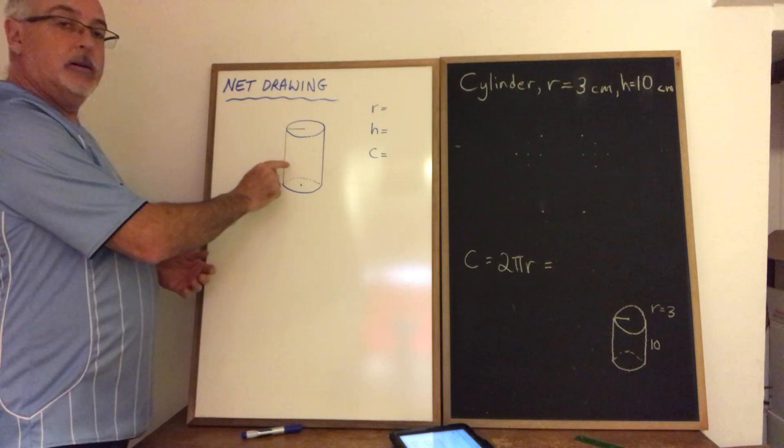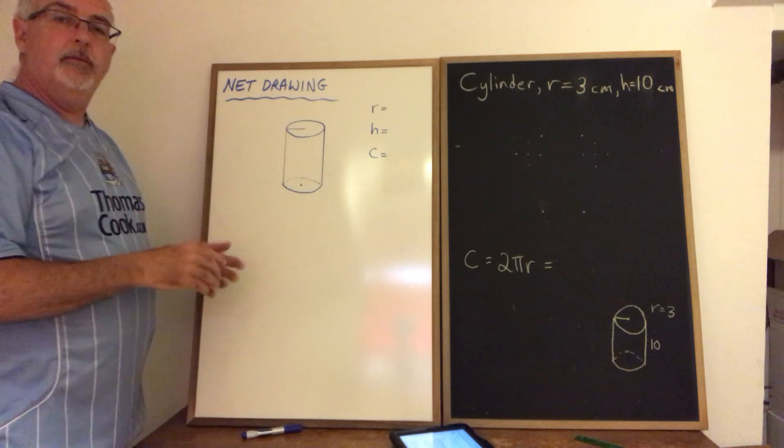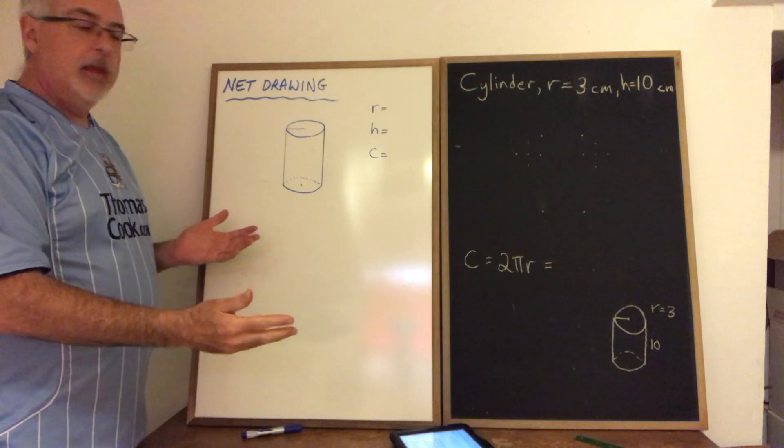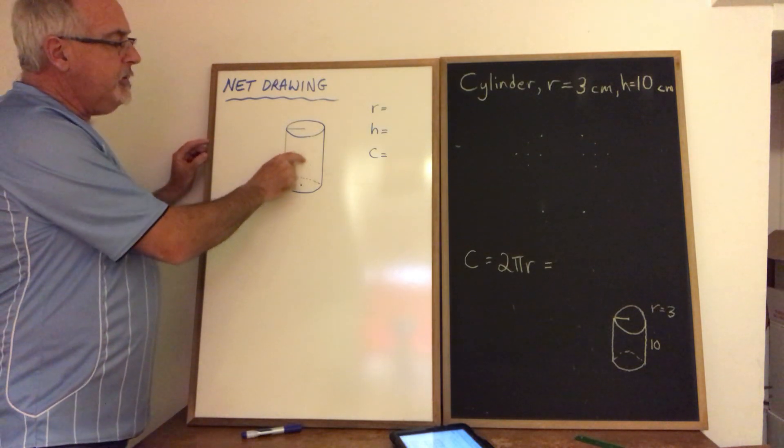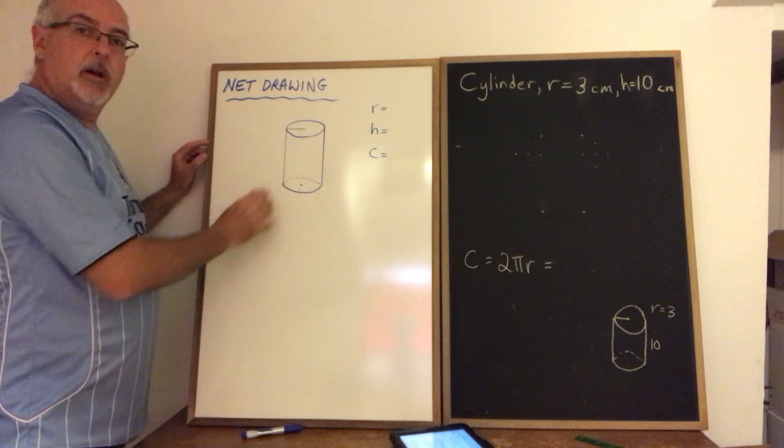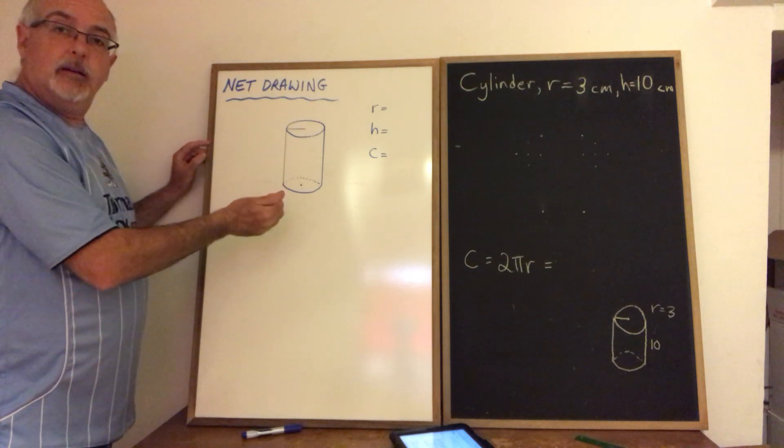You imagine that you're unfolding the three-dimensional figure so that it can lie flat and that's what you're drawing. With a cylinder, because part of the surface is curved, that involves an unrolling and the curved part of the cylinder, when you draw it flat, is a rectangle.